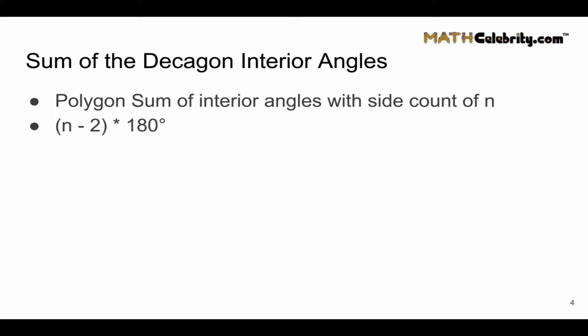Here's the polygon sum of interior angles formula. So it's n minus 2 times 180 degrees. With n equals 10 for a Decagon, we have 10 minus 2 times 180 degrees, which simplifies to 8 times 180 degrees, which equals 1440 degrees.